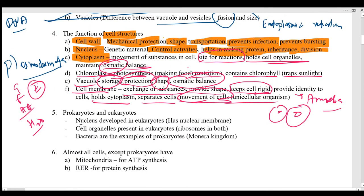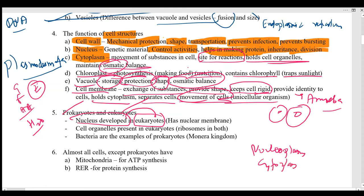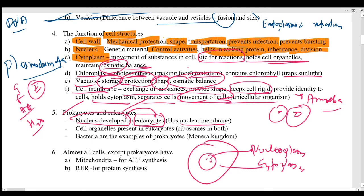Now the next topic: the difference between prokaryotic and eukaryotic cells. The nucleus is well-developed in the case of eukaryotic organisms. A well-developed nucleus means the nucleoplasm — the liquid inside the nucleus — and the cytoplasm are separated by the nuclear membrane. When the nuclear membrane is present, the cell is called eukaryotic.